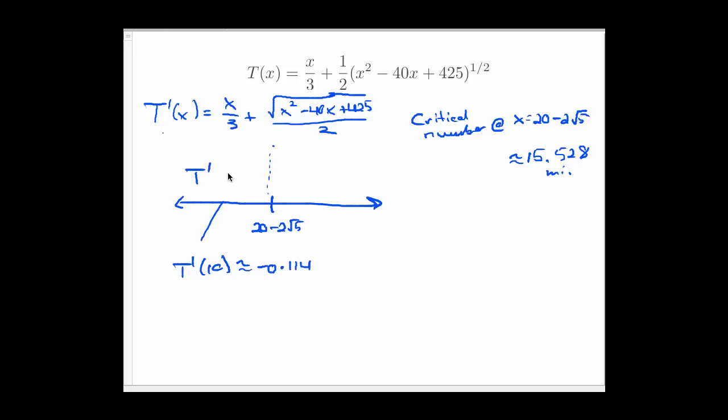Okay, so T' is negative to the left of this critical number. And on this side, I pick another nice round number like 20, T'(20) is actually exactly equal to 1/3 in this case. So positive 1/3. So that means T' is positive. So what this tells me is that T is decreasing up to this critical number, decreasing, and then increasing forever afterwards. That's what the derivative information tells me.